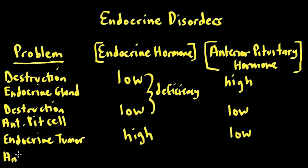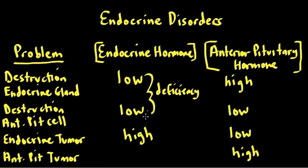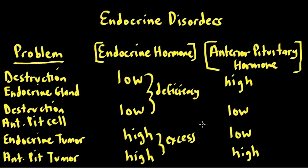We can also have an anterior pituitary tumor. In that case, the problem starts in the anterior pituitary, so that hormone would be high, and because anterior pituitary hormone levels are high, the output from the endocrine organ would also be high. In both excess scenarios, we see elevated cortisol, thyroid hormone, or sex steroids. But again, we can't determine the cause without looking at the anterior pituitary hormone levels.